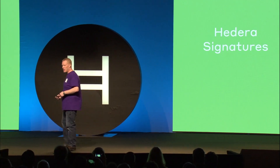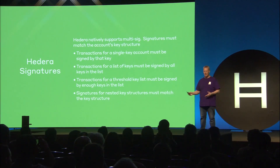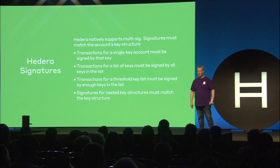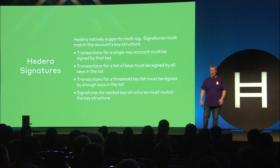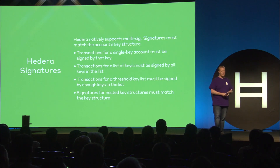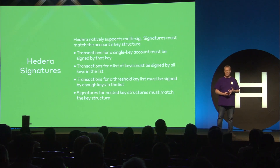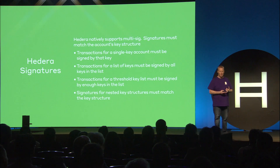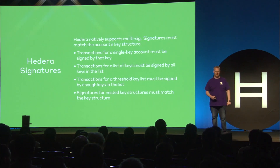Signatures must match the key structure on the account. For a single key — probably 999 out of 1000 transactions on Hedera — the transaction needs to be signed by that one key. Transactions for key lists require all key signatures; transactions for threshold key lists require N of M signatures; and signatures for nested key structures must match that entire nested structure for the network to accept the transaction.